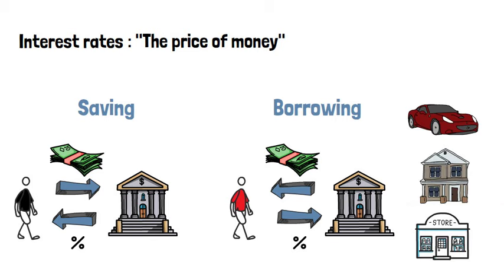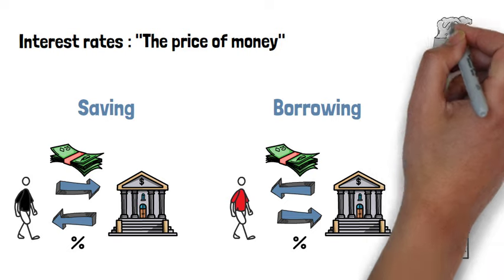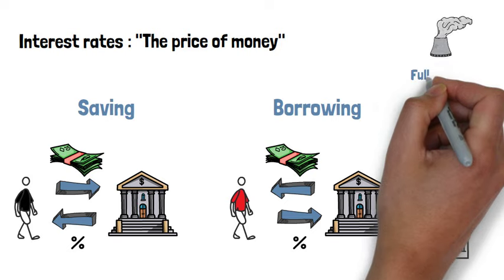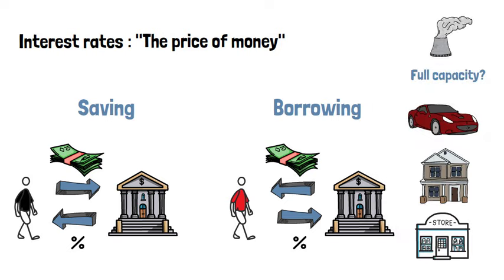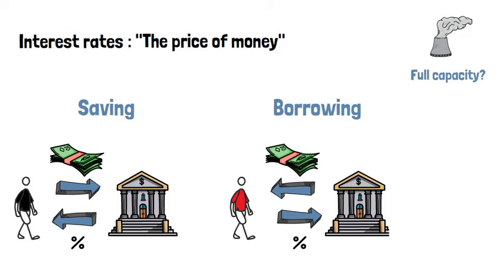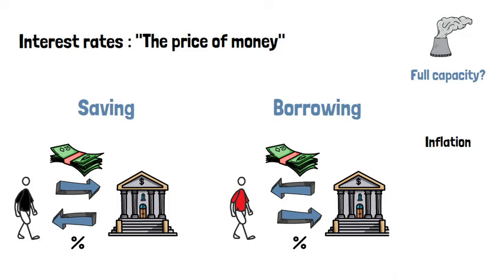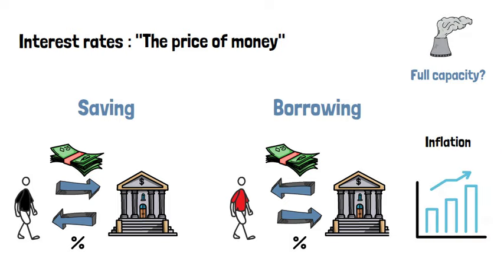Low interest rates can increase output, but only if there is spare capacity or unemployment in the economy. If the economy is already operating near full capacity, then lower interest rates will just lead to more inflation, as more money is circulating to chase a constant supply of goods and services.